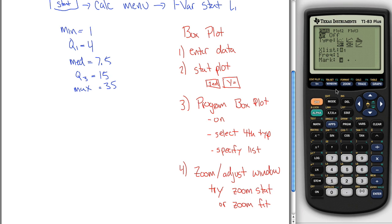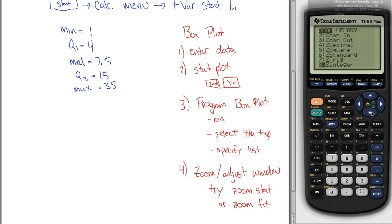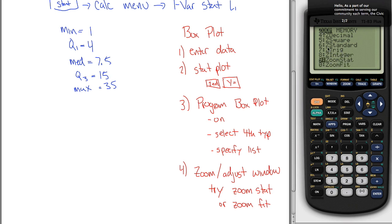These are kind of ways for your calculator to guess how big you want the window to be. So zoom stat is saying, if you're doing statistical stuff, how big should the window be? So we can try that here. We'll hit the zoom button, and then we'll go down to zoom stat, which is way down here. Number nine on my list, so I hit enter.